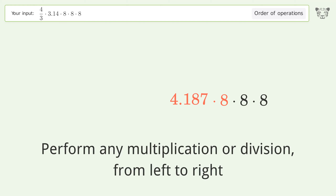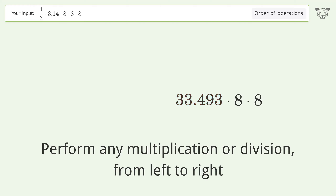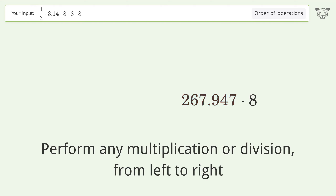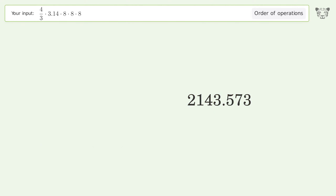4.187 times 8 equals 33.493; 33.493 times 8 equals 267.947; 267.947 times 8 equals 2143.573.